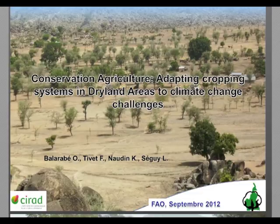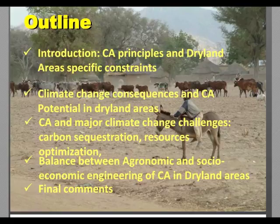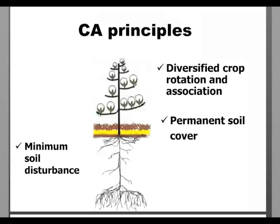Our presentation entitled Conservation Agriculture: Adapting Cropping Systems in Dryland Areas to Climate Change Challenge has been prepared by colleagues from CIRAD. We will focus on dryland area specific constraints according to CA principles. The most important thing is that three different principles are important in CA, and each principle has its importance in dryland areas, mostly concerning carbon sequestration and water management.